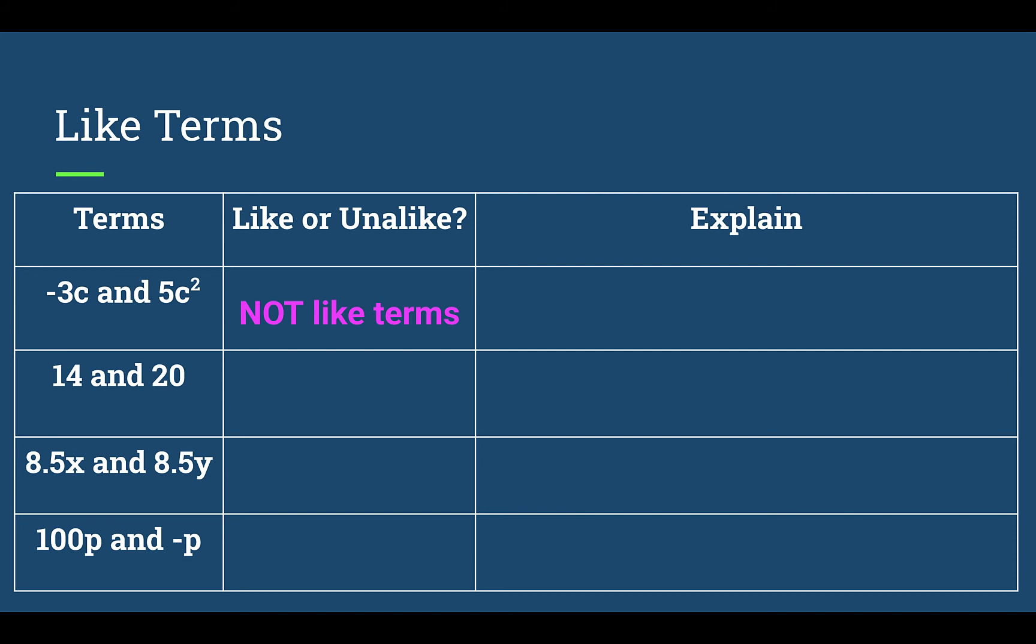In this first row, we have negative 3c and 5c squared. Those are not like terms because they have the same variable, which is what we want, but it's not the same exponent. Okay. If they were both c to the second powers, we'd be fine. If they were both just c, we'd be fine. But it has to be the same variable and the same exponent.